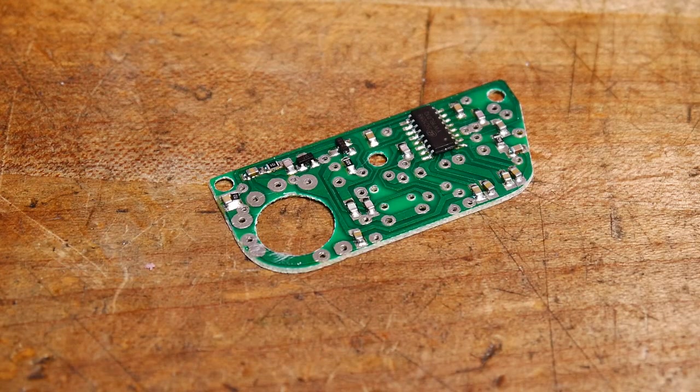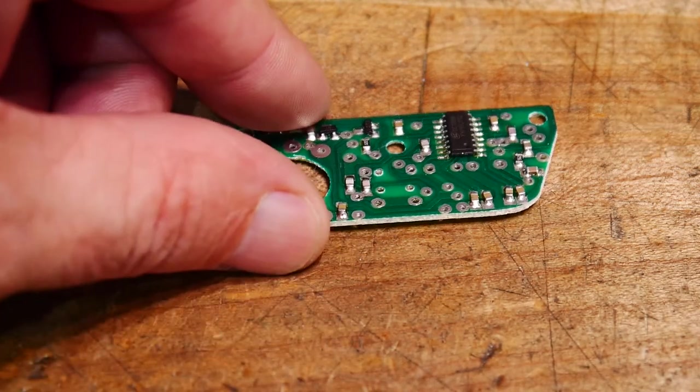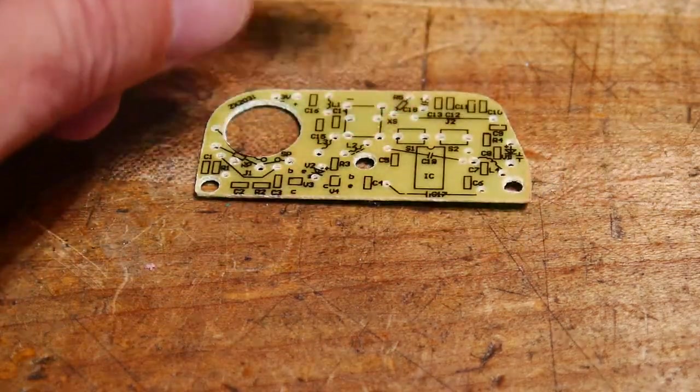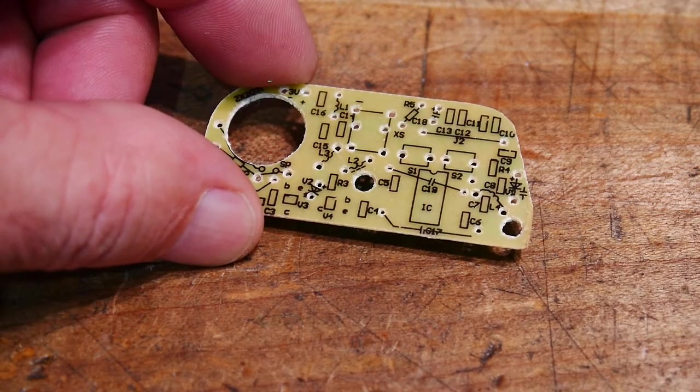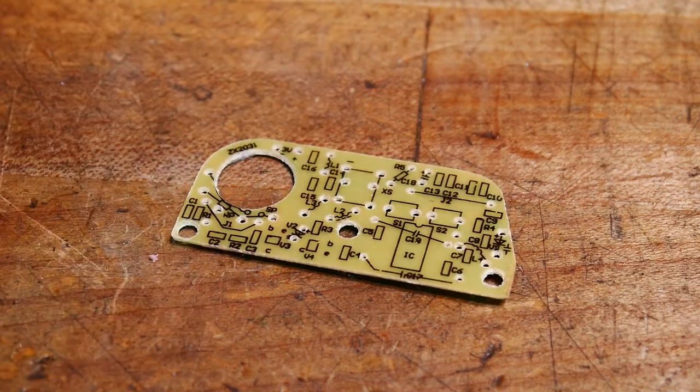Next to the next step is to try to find the through hole components and start loading them. It looks like the through hole components go on this side of the board. So we've got that side done. Let's start working on this side.